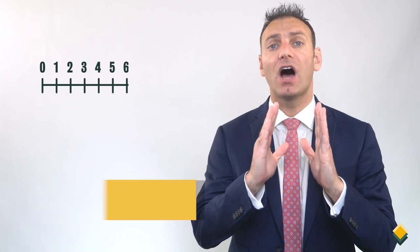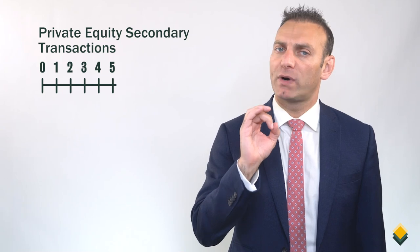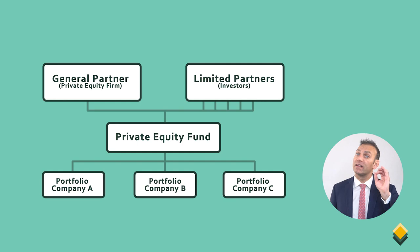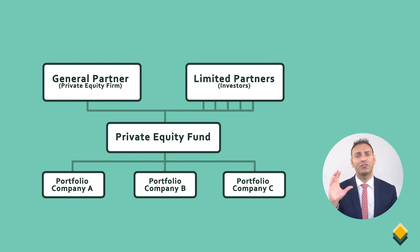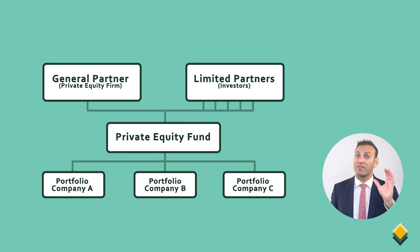As we mentioned in our previous videos, investors can shorten the duration of their private equity investments through private equity secondary transactions. Just to recap, LPs stand for limited partners, or the investors in the private equity fund, and the GP stands for general partner, or the private equity firm. A private equity secondary transaction is when an LP sells its interest in a private equity fund to another LP.